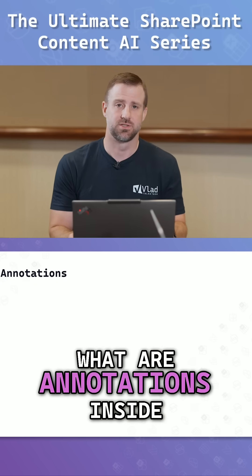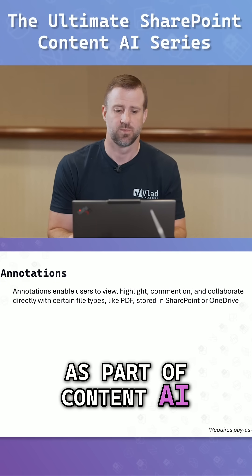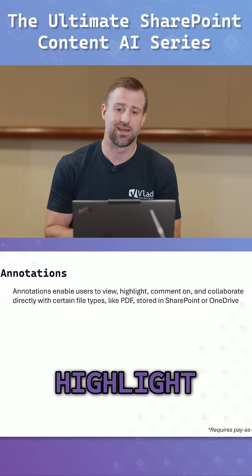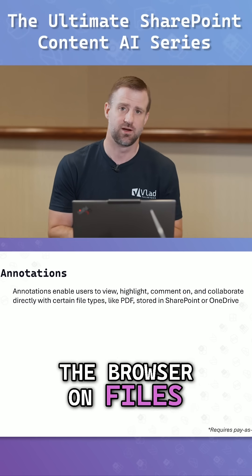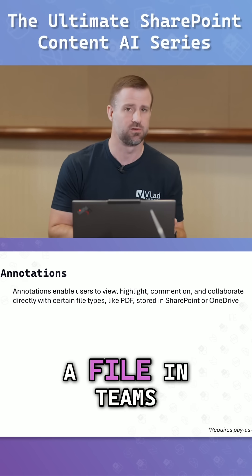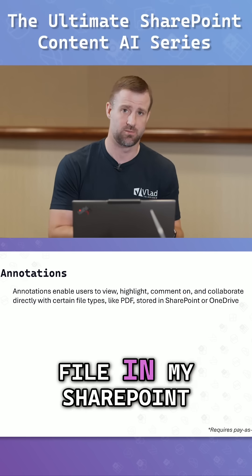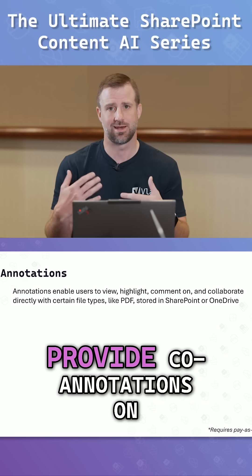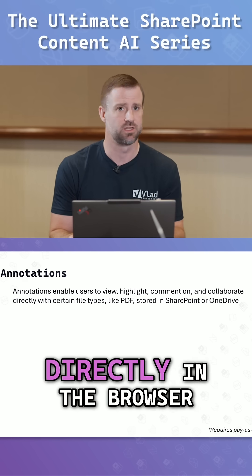So what are annotations inside of SharePoint and OneDrive as part of Content AI? Annotations enable you to view, highlight, and comment directly in the browser on files such as PDFs that are stored in SharePoint and OneDrive. You can open up a file in Teams, in OneDrive, or in your SharePoint document library, and provide annotations on top of that file directly in the browser.